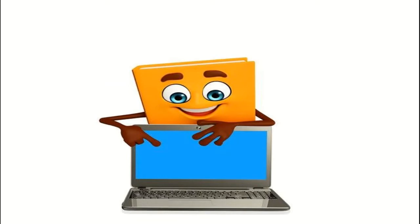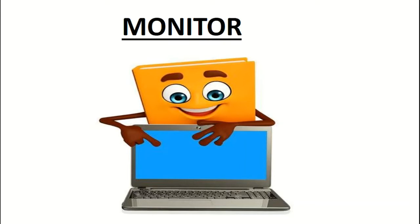Now, can you tell me what the book is pointing to? It is pointing towards the monitor. Monitor or screen is the most common form of computer output. We can watch movies, play games, and see all commands we type through the keyboard. The picture on the monitor is actually made by thousands of tiny dots called pixels. There are many types of monitors, and these days in our homes we usually use flat panel display monitors.